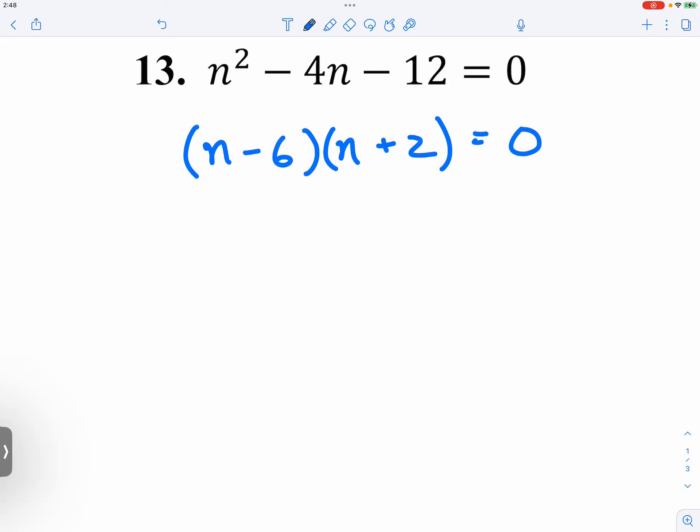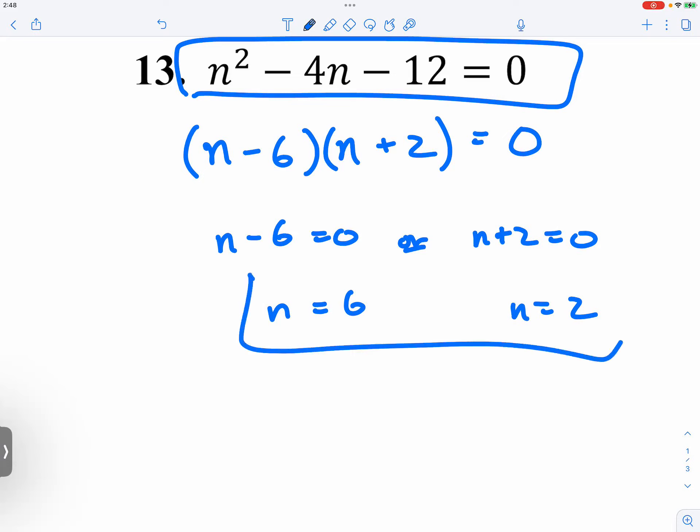Now it's really just practice, practice, practice. This is how we factor it, and then we can say n minus 6 is equal to 0 or n plus 2 is equal to 0. Again, when we are trying to solve, we are trying to find the value to make this statement true. That's the meaning of solve, and these are our solutions because these two values will make the statement true.